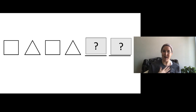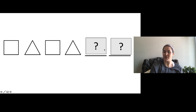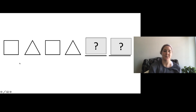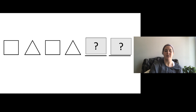Okay, so this is my pattern and I see some 2D shapes and then I see two question marks and boxes at the end. Those are the ones that I'm going to need to draw — the ones that are missing. So let's see. I have square, triangle, square, triangle.